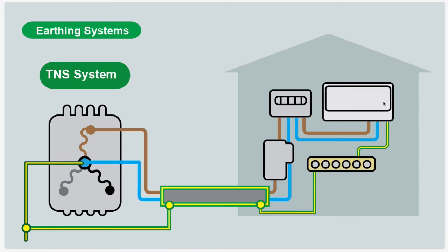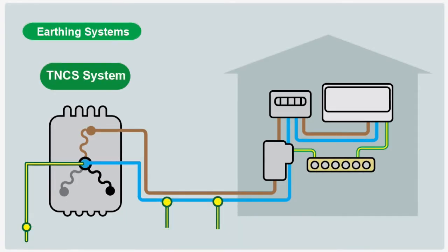The next type of commonly used earthing system is your TNCS system. This is where the earth and the neutral are combined.